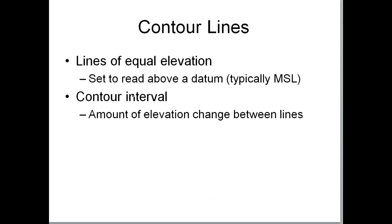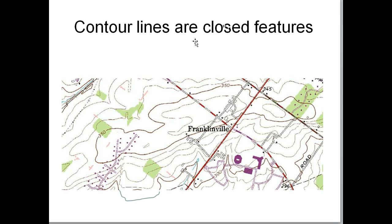Some information about contour lines: they represent lines of equal elevation and are based on mean sea level set at zero. The contour interval indicates how much elevation change exists between contour lines. Contour lines are also closed features — you can follow a 350-foot contour line all the way through Franklinville, under the highway, and it closes back on itself. If you had the adjacent map, you could connect the contour lines and they would be continuous.